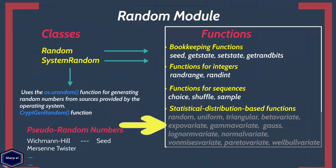Statistical distribution based functions generate random numbers from different distributions such as uniform or normal distribution. I will not cover all these functions because they require extra knowledge of different distributions and even complex examples are required to understand them.